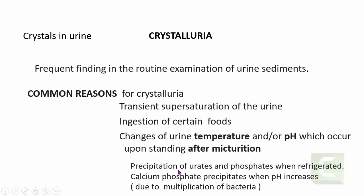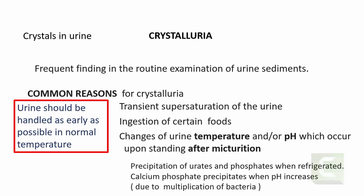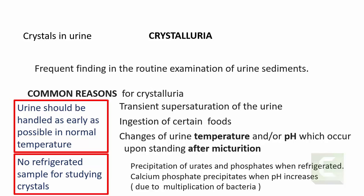For example, you can see precipitation of urates and phosphates, particularly when the sample is refrigerated. There can be precipitation of calcium phosphates when the pH increases — for instance, in suspected urinary tract infection, bacteria in the urine multiply, causing an increase in pH and calcium phosphate precipitation. Urine examination should be done as early as possible after collection, at a temperature close to body temperature. Never study crystals in a refrigerated sample.